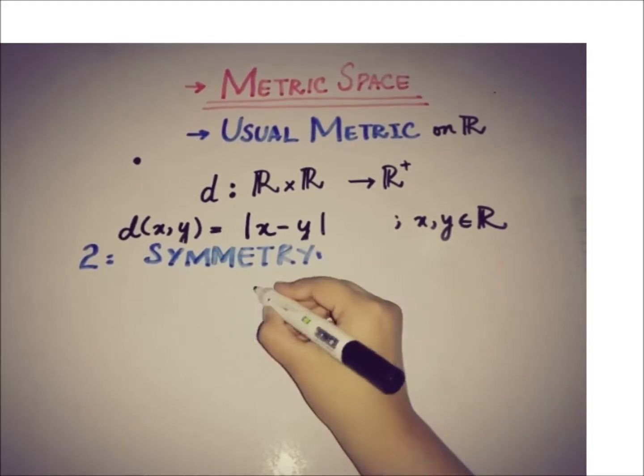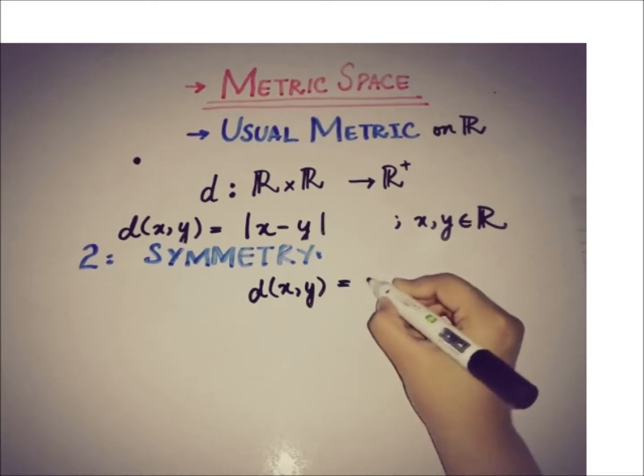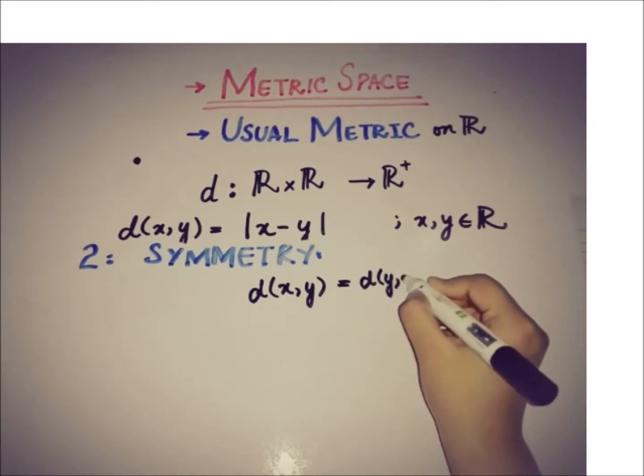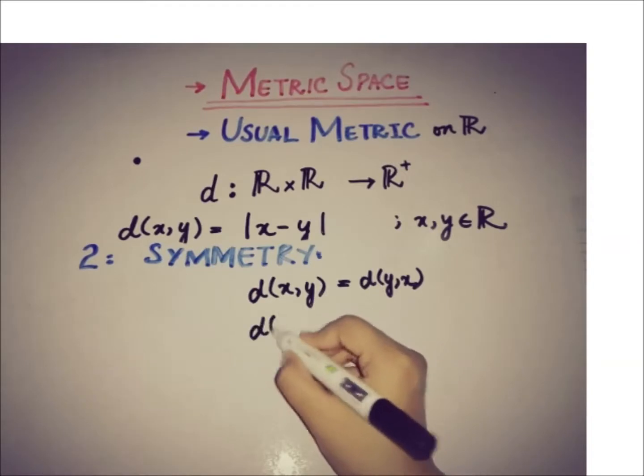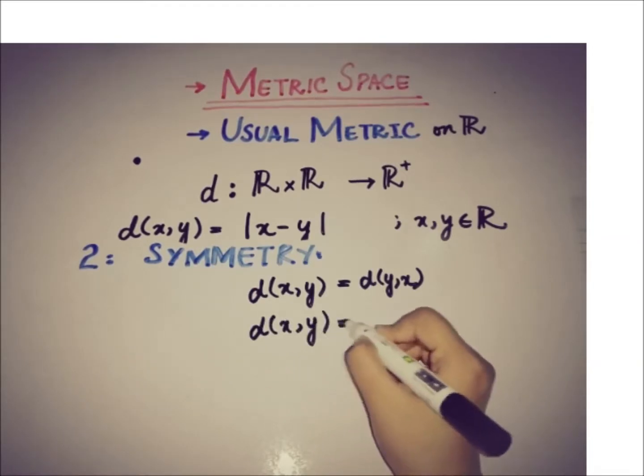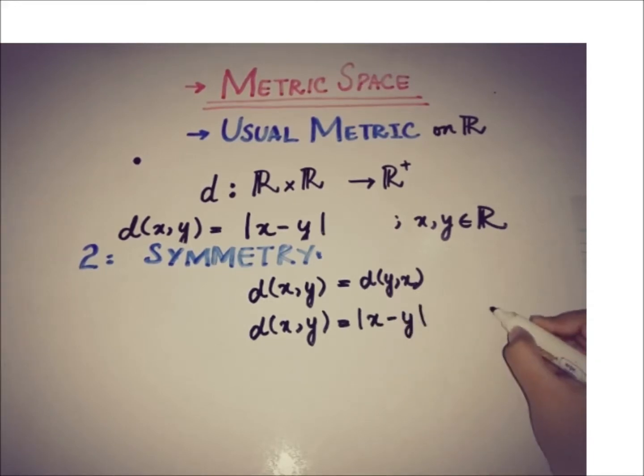The second property is about symmetry, that is d(x,y) must be equal to d(y,x). So if you take this d(x,y) by definition that we have defined here, absolute value of x minus y where x and y belong to ℝ.